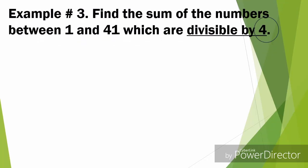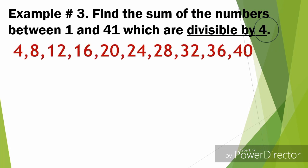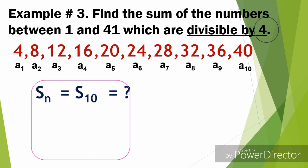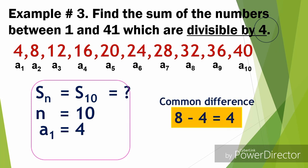Example number 3: Find the sum of the numbers between 1 and 41 which are divisible by 4. The numbers divisible by 4 between 1 and 41 are: 4, 8, 12, 16, 20, 24, 28, 32, 36, and 40. So 4 is the first term, 8 is the second term, and 40 is the 10th term. Therefore, n is 10, a sub 1 is 4, and the common difference is 8 minus 4 equals 4.